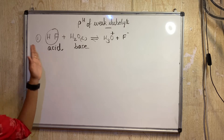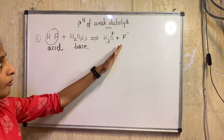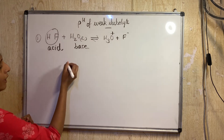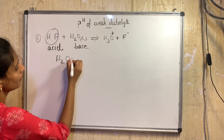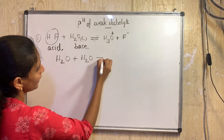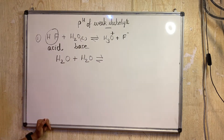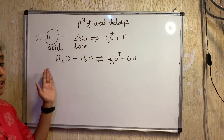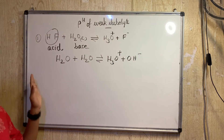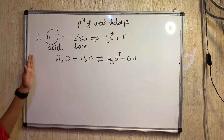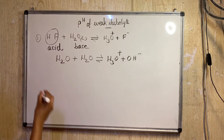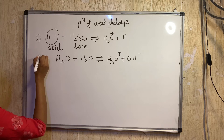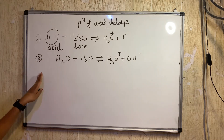We have to dissociate HF into H3O⁺ and F⁻ in water. One molecule of water combined with another molecule of water gives water dissociation, giving H3O⁺ and OH⁻. So we have to do two balanced reactions: Step 1 is to identify the acid-base species, and Step 2 is to balance all possible reactions.